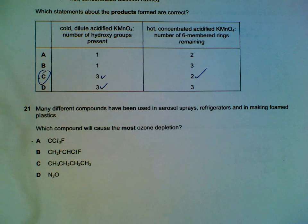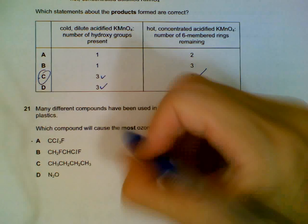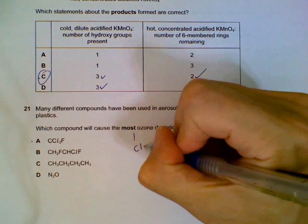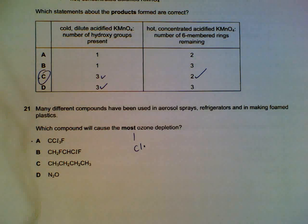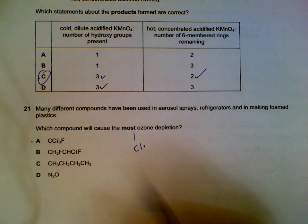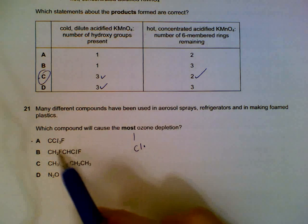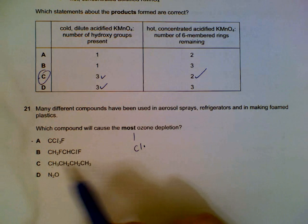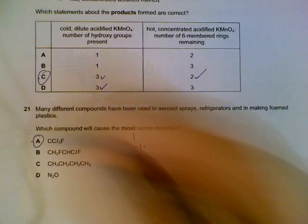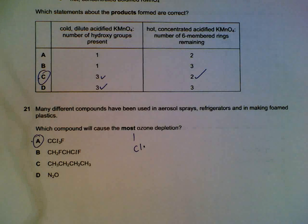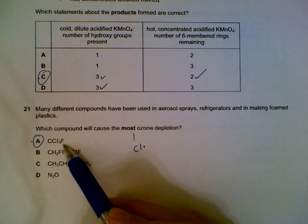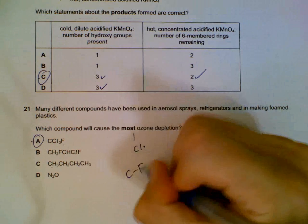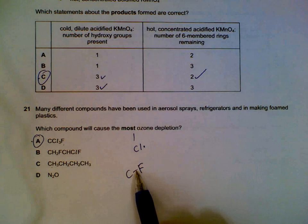When you want which compound will cause the most ozone depletion, we go back to the idea that the ozone depletion is mostly caused by your chlorine radicals. So we look for the one that has the most chlorine atoms. In this case will be A. Fluorine doesn't really contribute to the depletion because the CF bond is pretty strong. It won't be broken apart so easily to release your F radicals.